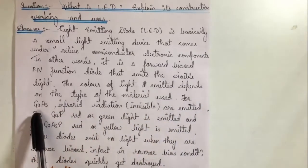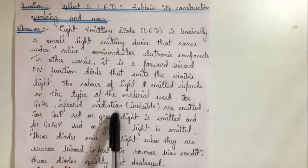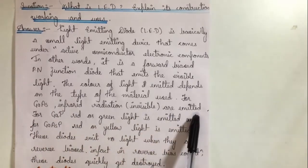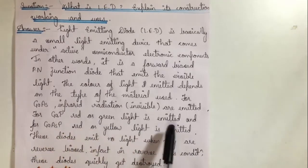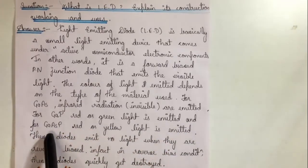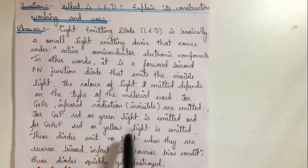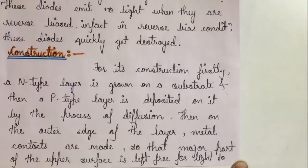For gallium arsenide, infrared radiation (invisible light) is emitted. For gallium phosphide, red or green light is emitted. For gallium arsenide phosphide, red or yellow light is emitted. These diodes emit no light when reverse biased. In fact, in reverse bias condition these diodes quickly get destroyed, meaning LED works in forward bias condition only.